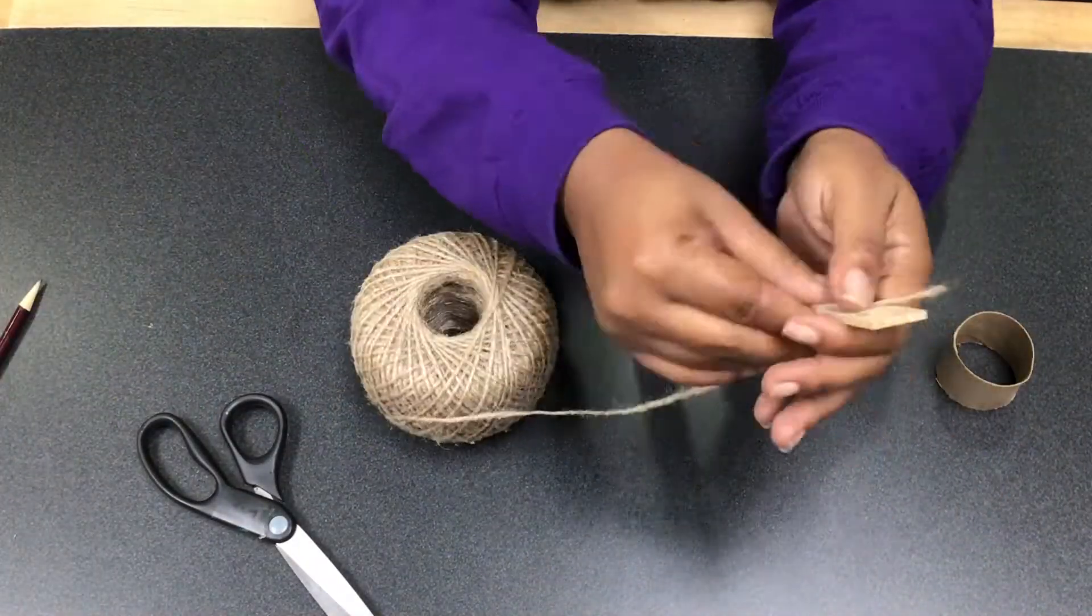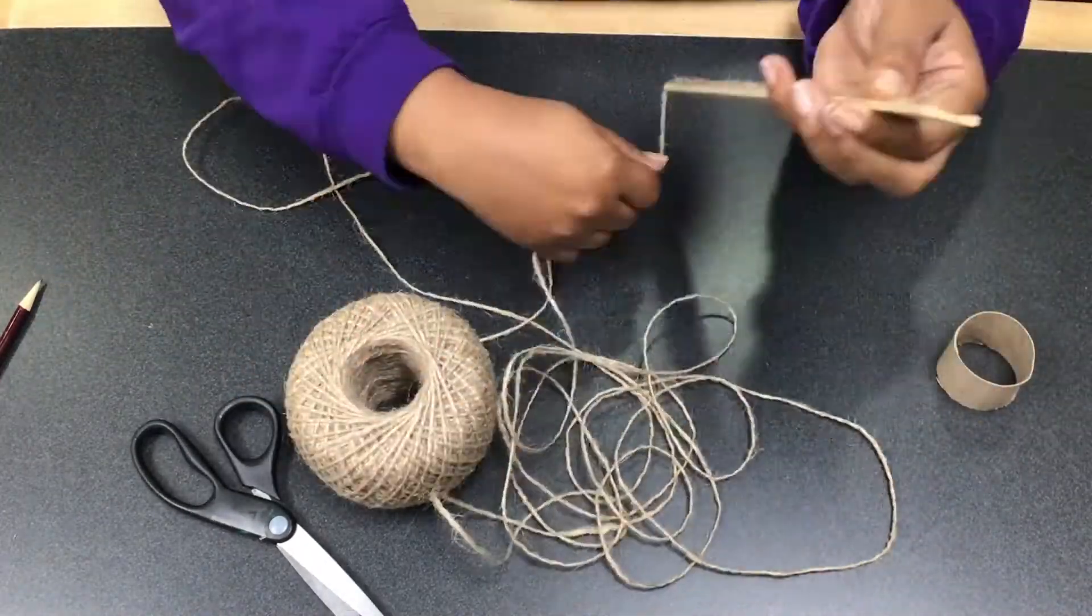Wrap twine around a 12 inch ruler 20 times and cut it.